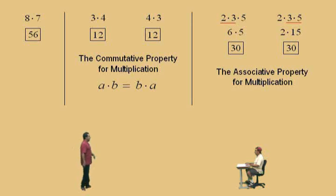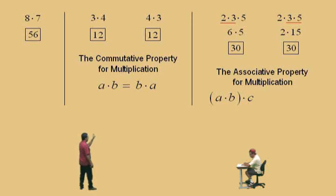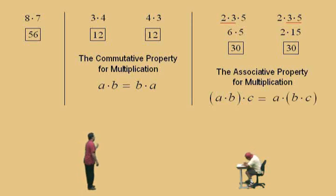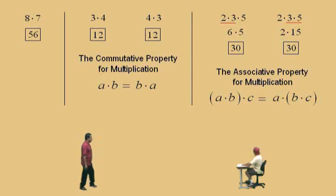What is the associative property for multiplication telling us, Charlie? It's telling us that if you have (A times B) times C — which means you multiply A times B first — it will be the same as multiplying B times C first, and then multiplying by A. And the problem we did up there demonstrates the associative property.